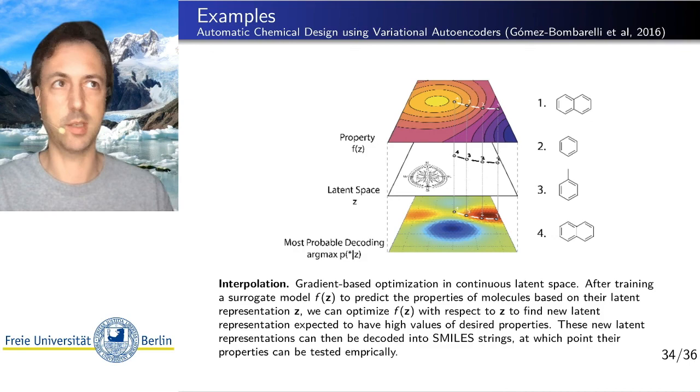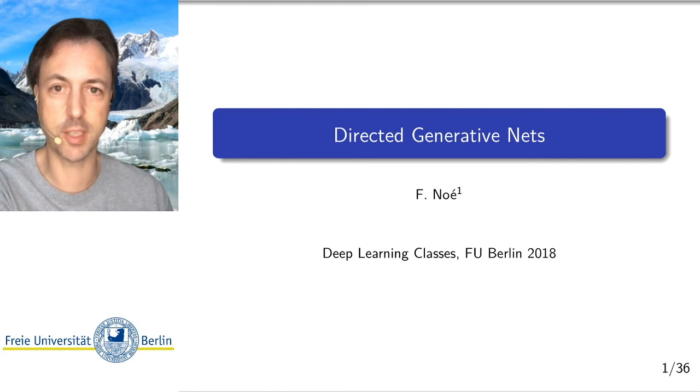So with this we are at the end of this first lecture on Directed Generative Nets, Variational Autoencoders. And in the next lecture we will speak on Generative Adversarial Nets, another instance of Directed Generative Nets that is very commonly used. Thank you for your attention and see you in the next lecture.